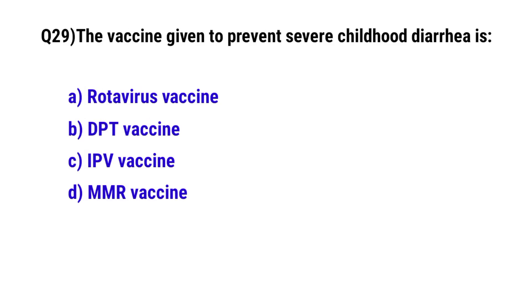Question No. 29. The vaccine given to prevent severe childhood diarrhea is? The correct option is A. Rotavirus vaccine.